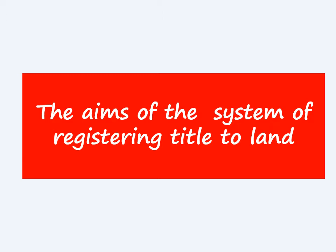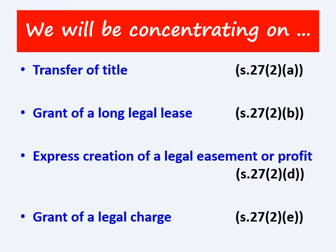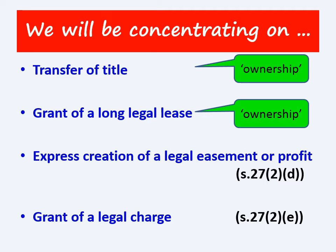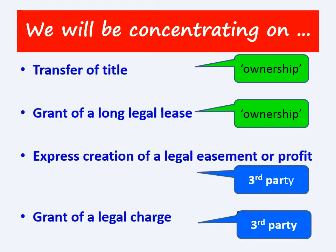We're going to concentrate on four registrable dispositions because they are the most likely ones you'll encounter in an assessment. There are two estates — relating to ownership of the land — and two third party rights, which are rights enjoyed by people over somebody else's land.